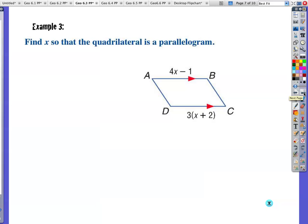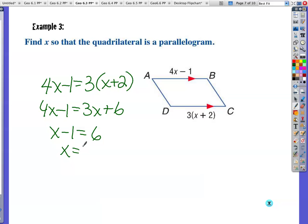Example three. Find x so that the quadrilateral is a parallelogram. So we want to make sure this is a parallelogram in order for that to happen. Opposite side here, one pair of opposite sides are parallel. And if I find out that these are congruent, then it would be a parallelogram. So I'm going to set them equal to each other. I'm going to make them be congruent. So 4x minus 1 is equal to 3x plus 6. Subtract 3x from both sides. Now I'm going to add 1 to both sides. My x value is 7. And let's just double check. 7 times 4 is 28. 28 minus 1 is 27. I put 7 in here. 7 plus 2 is 9. 9 times 3 is 27. Happy, happy, because this is now a parallelogram.